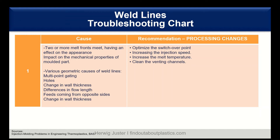What can we do to solve the situation of weld lines? Looking at the troubleshooting chart, the causes include: when two or more melt fronts meet, they affect the part's appearance and also impact its mechanical properties since strength is reduced at that location. Geometric causes include multi-point gating where several melt flows meet, holes as obstacles, changes in wall thickness causing different melt velocities, differences in flow length, and gating on opposite sides of the part.